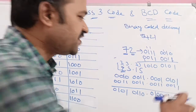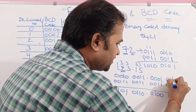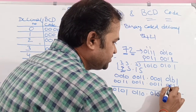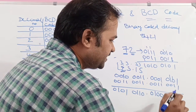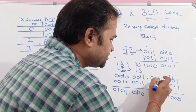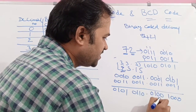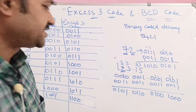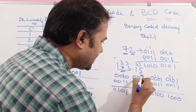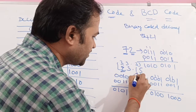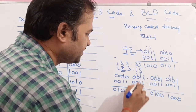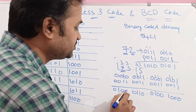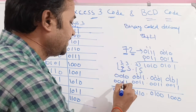Carrying out the binary additions for each digit: the addition of 0011 to each BCD digit confirms the XS3 results. So the XS3 code for 23.15 is 0101 0110 . 0100 1000.